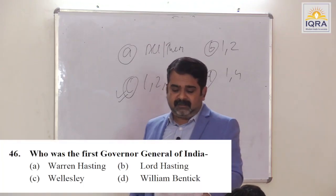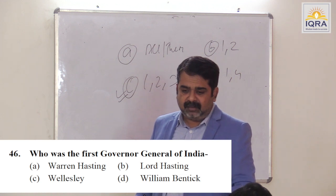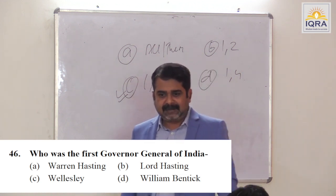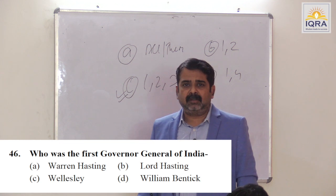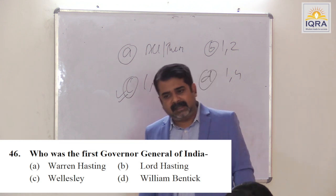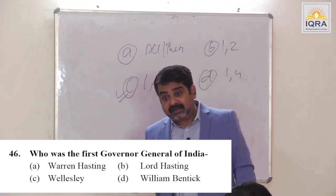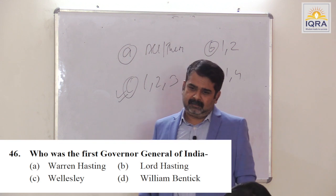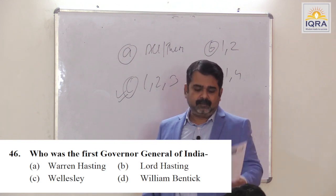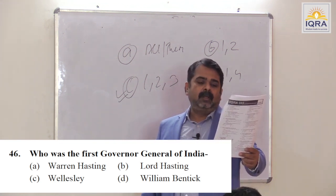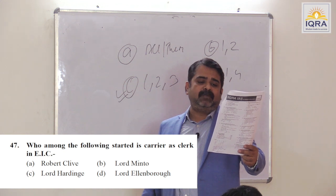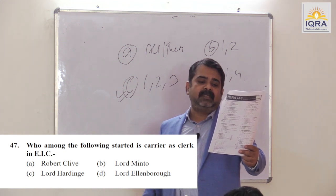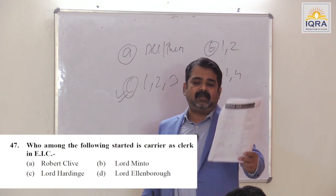Who was the first Governor General of India? William Bentinck. First Governor General of Bengal? Warren Hastings. First Governor General and Viceroy? Canning. Answer is D. Who among the following started his career as a clerk in EIC? Robert Clive. Answer is A.